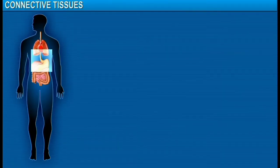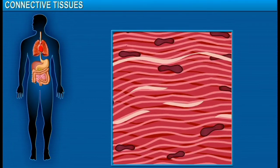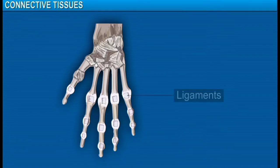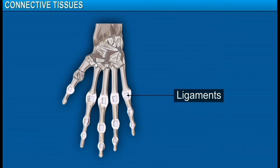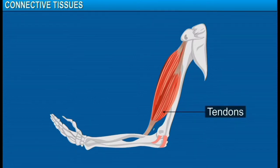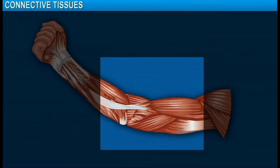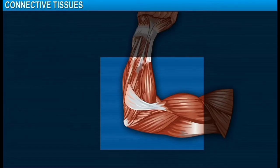These tissues that pack and bind various organs are fibrous connective tissues. They include ligaments that connect two bones. Ligaments are tough and elastic and provide strength and flexibility. Tendons connect bones to the muscles. Tendons are tough and non-elastic and provide great strength and limited flexibility.